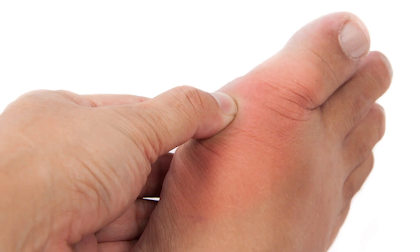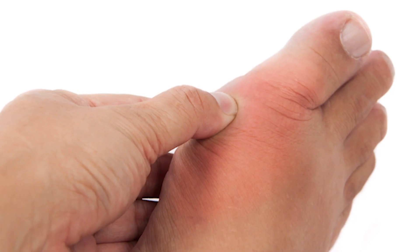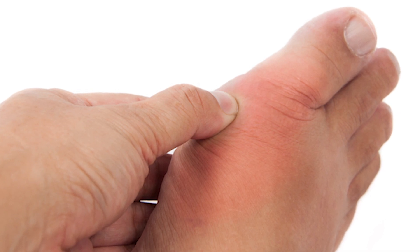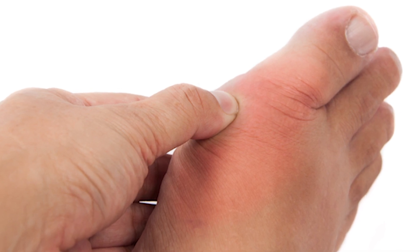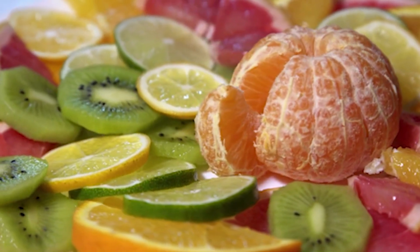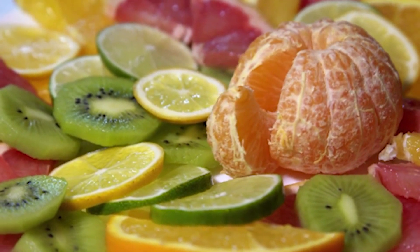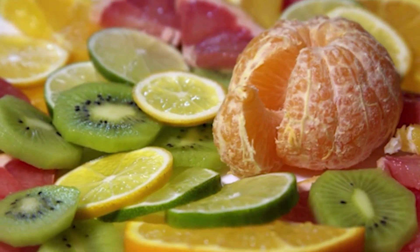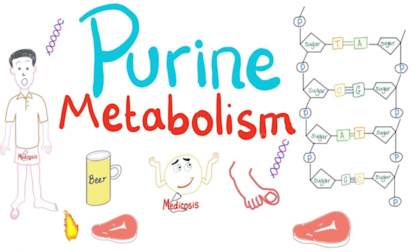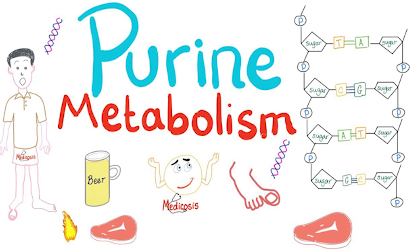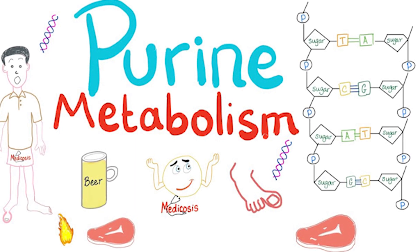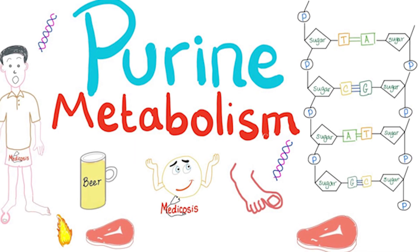The risk of gout is greater as alcohol intake goes up. Eating or drinking food and drinks high in fructose also increases the risk of gout. And the most common factor is having a diet high in purines, which the body breaks down into uric acid.